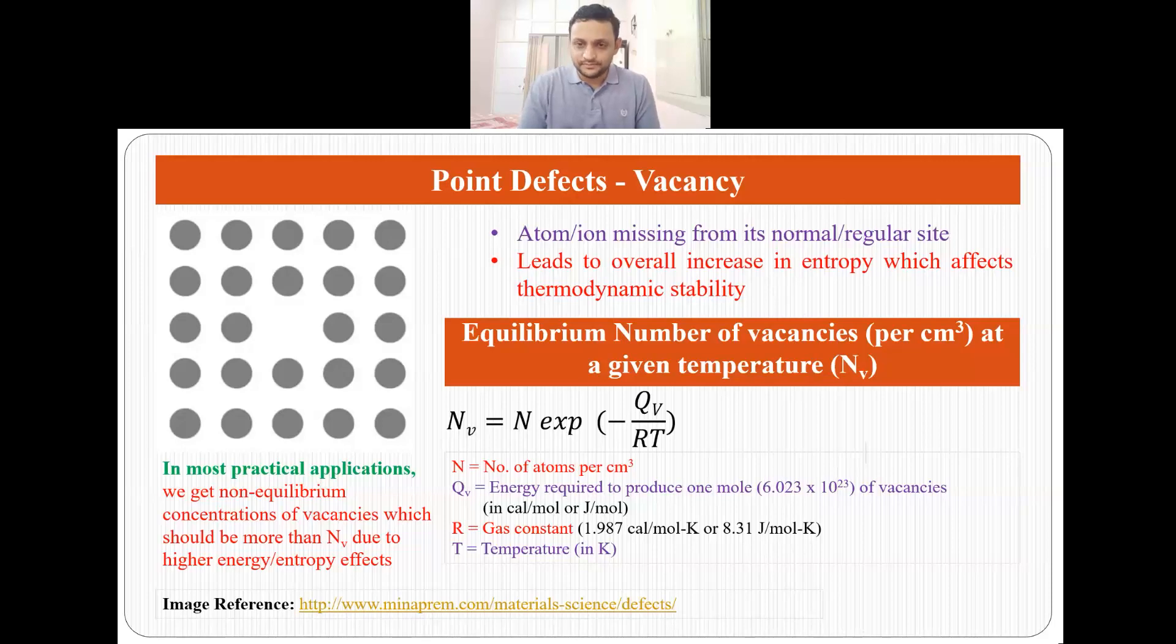How do we calculate the number of vacancies at a given temperature? There is an equation for equilibrium number of vacancies: Nv = N exp(-Qv/RT), where Nv is the equilibrium number of vacancies per cm³ at a given temperature, N is the number of atoms per cm³, Qv is the energy required to produce one mole (6.023 × 10²³) of vacancies, R is the gas constant (1.987 cal/mol·K or 8.31 J/mol·K), and T is temperature in Kelvin.